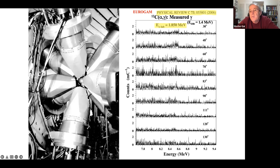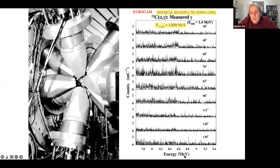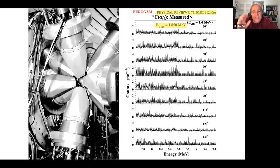The gamma detector array uses 15 segmented detectors at $200,000 each. We look for gamma rays at around 8.5 MeV from C12(α,γ). Currently measuring at 1.4 MeV, wanting to go to lower energies where the cross section is even smaller. It is clearly time to do something very different.